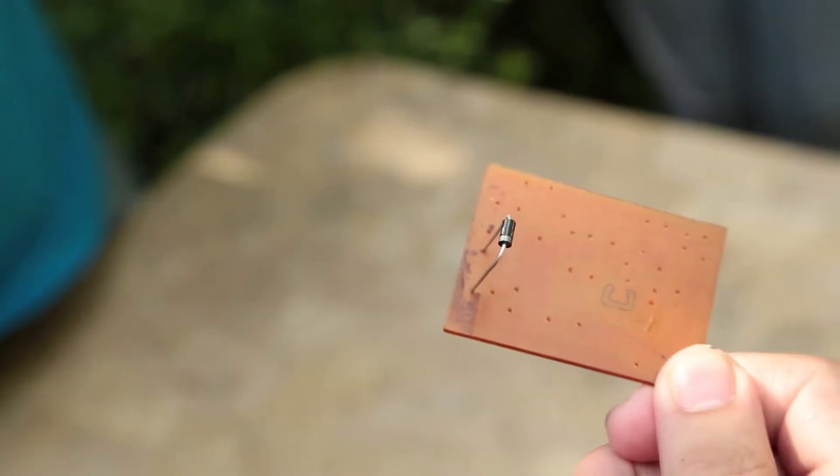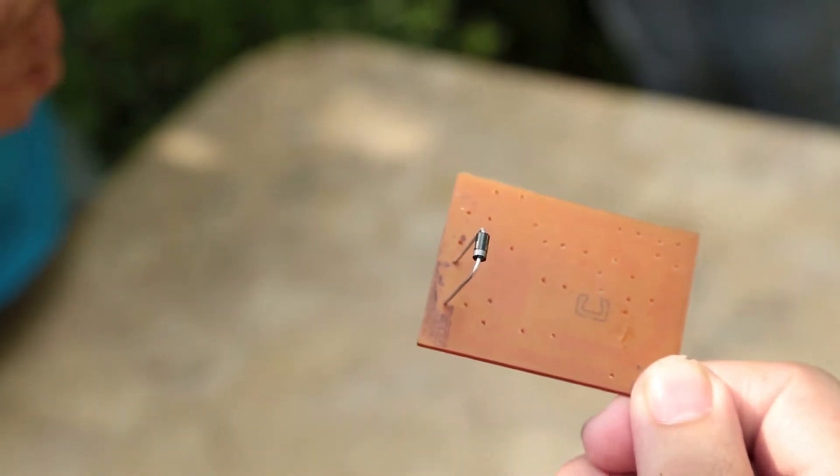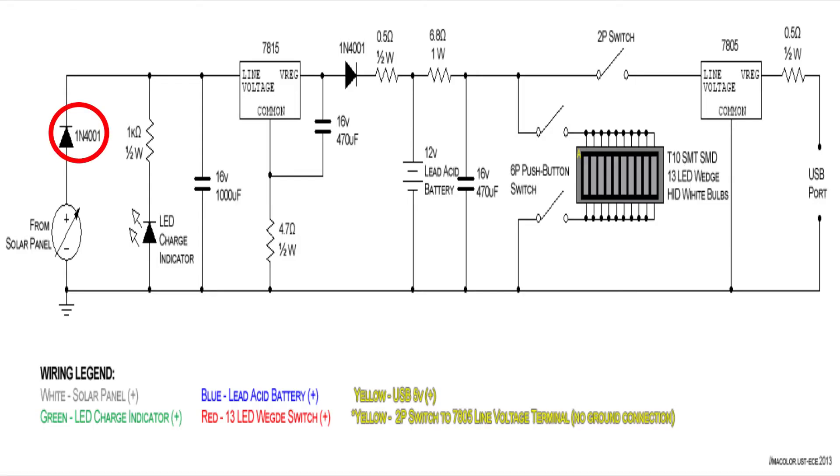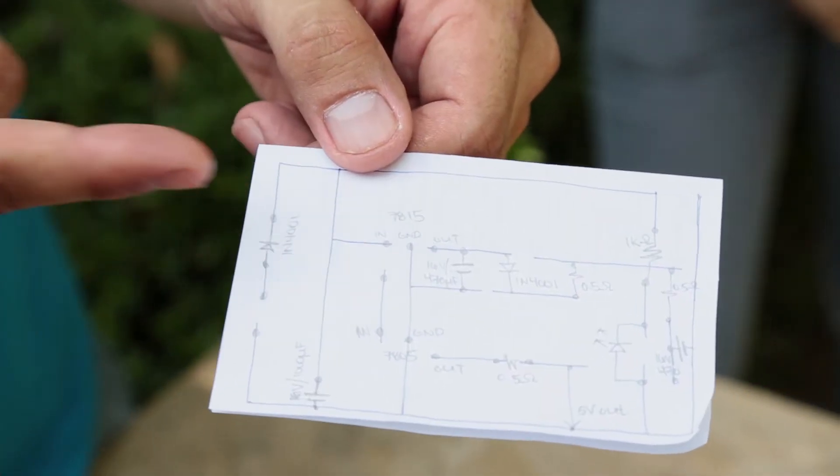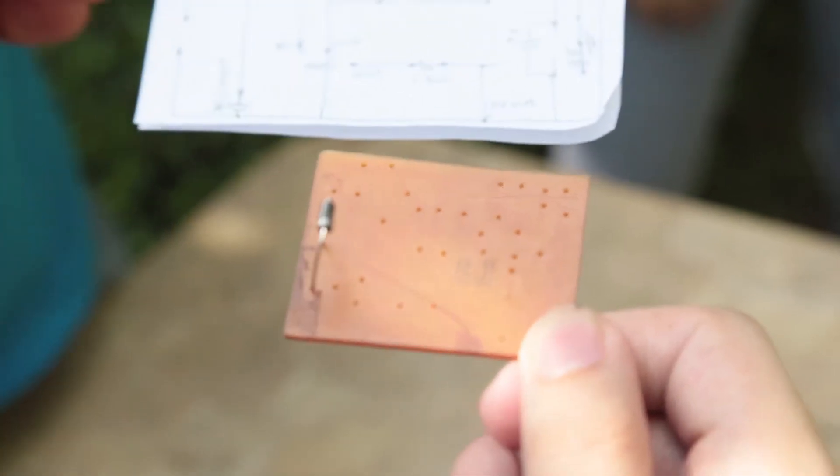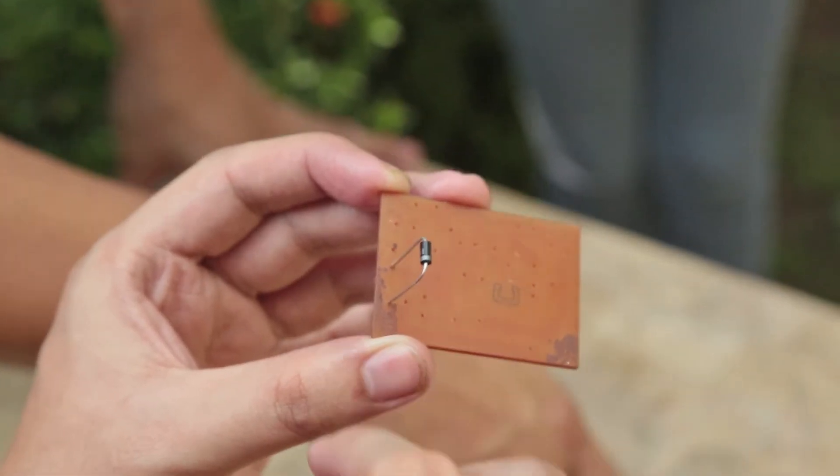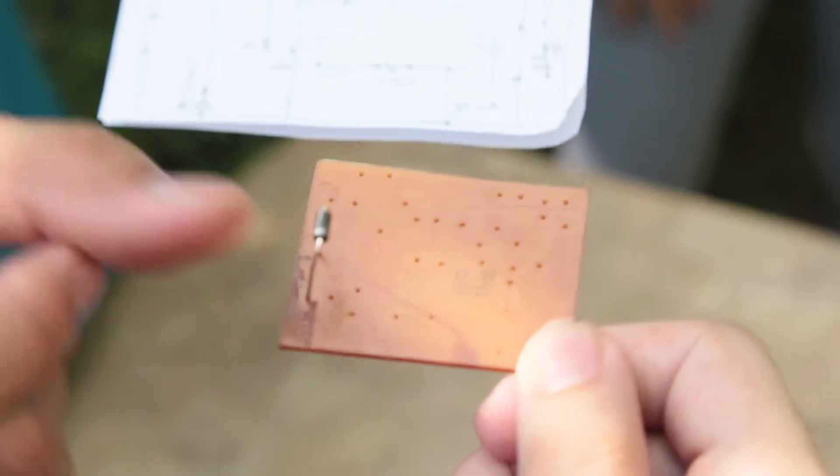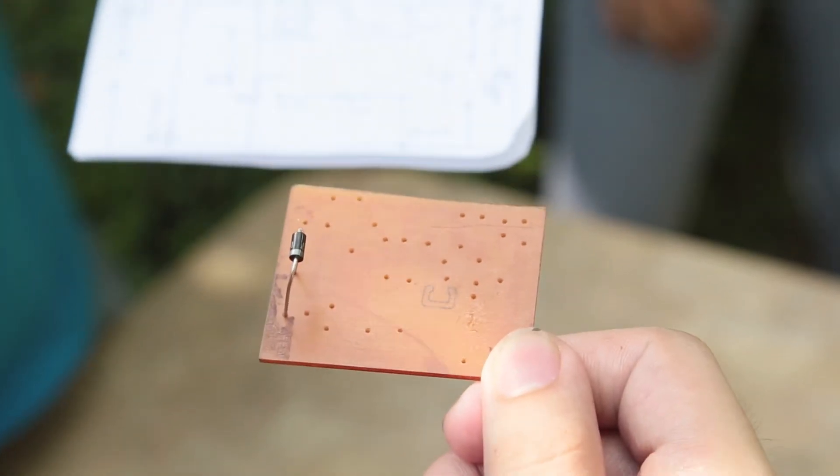Components such as diodes, capacitors, and regulators have certain pins or specific pins that should be put in proper orientation or they won't work. The first component we're inserting is the diode closest to the solar panel input. The drawing for the diode has a line on it, and the actual component has a gray strip on one end. The line represents the gray strip on this circuit.